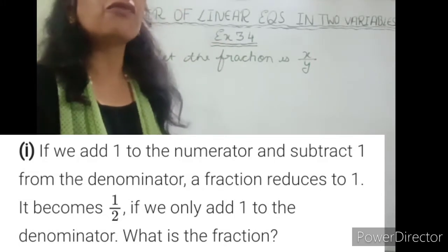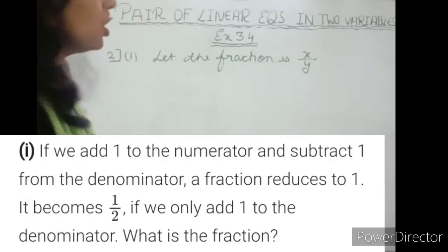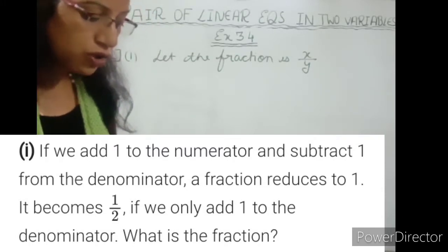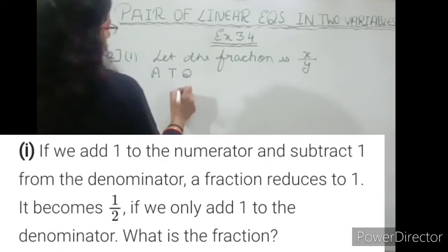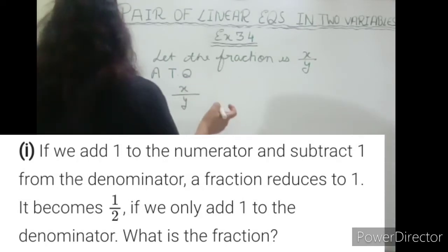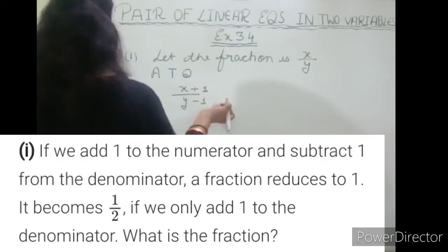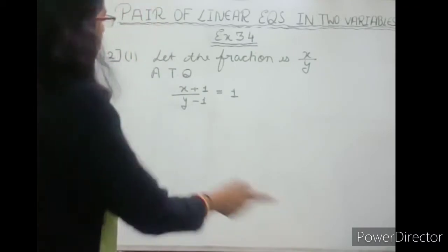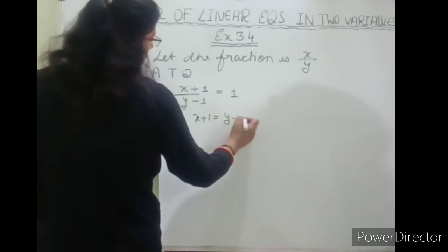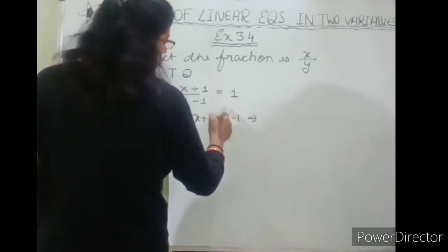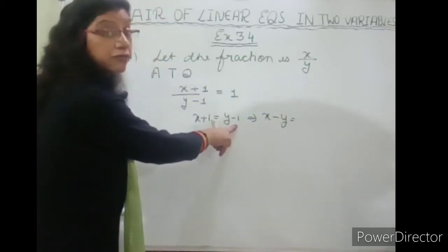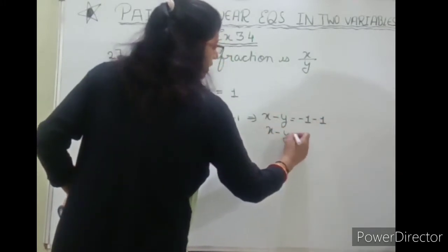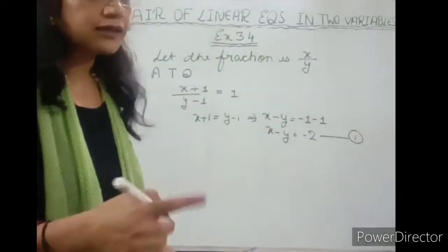Start reading from the first word: if we add one to the numerator and subtract one from the denominator, the fraction reduces to one. According to the question, cross multiply — you get x plus one equals y minus one. Rearranging: x minus y equals minus two. This is equation number one.